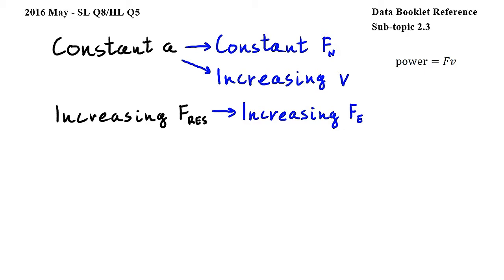Constant acceleration, as given in the question, means that there is a constant net force acting on the train, and that it has an increasing speed. We are also told that the resistive force increases as speed increases.